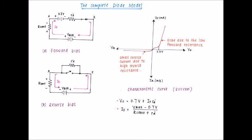From the characteristic curve for the complete diode model, the slope is due to the low forward resistance. The constant region below the y-axis is due to the small reverse current caused by the high reverse resistance.